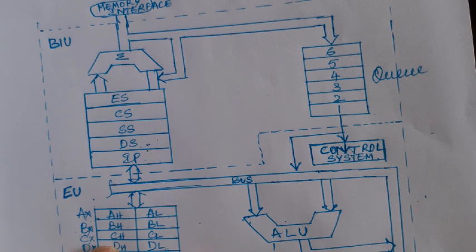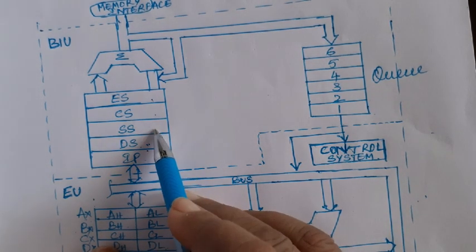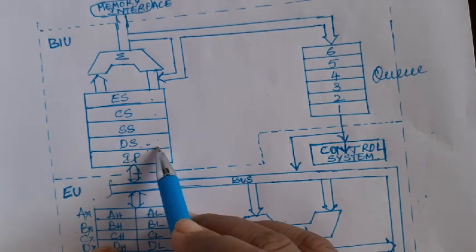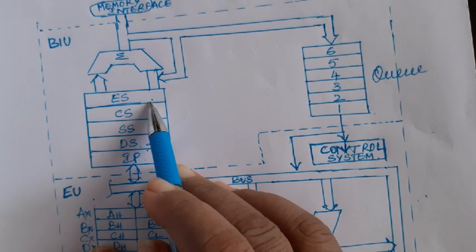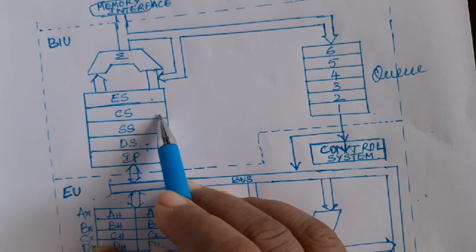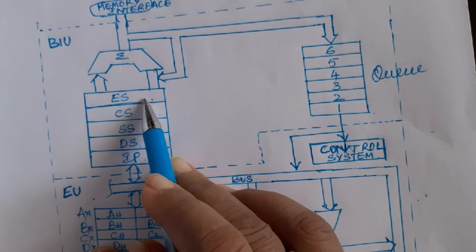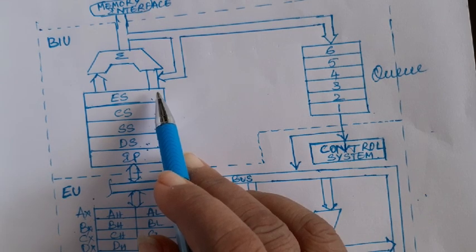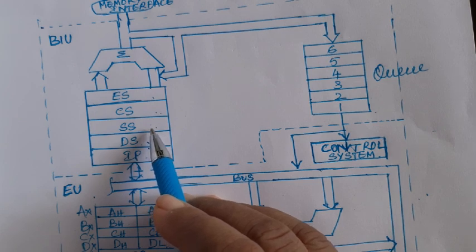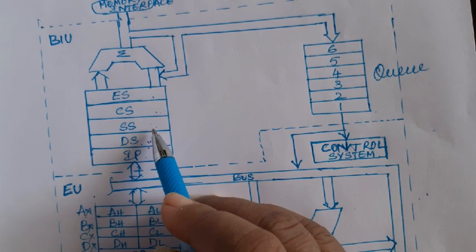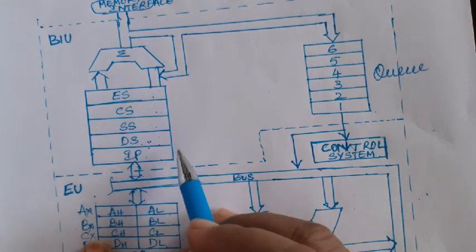In 1 megabyte of memory there can be 16 such 64K segments. At any time, only 4 segments will be active, and the most significant 16 bits of each active segment's base address will be stored in the segment registers. The segments are named: Data Segment, Stack Segment, Code Segment, and Extra Segment. Code Segment is for program storage, Data Segment and Extra Segment are for data storage, and Stack Segment is for temporary storage of data during program execution.